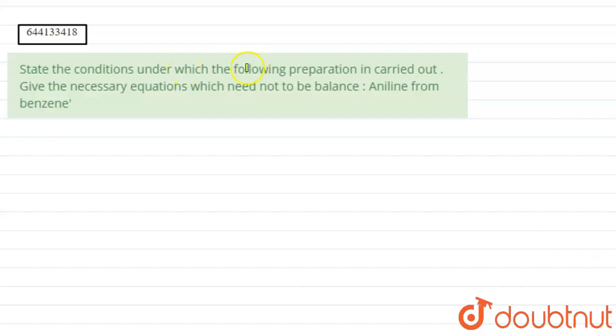we have to state the condition under which the following preparation is carried out and we have to give the necessary equation which need not to be balanced. So we have to give aniline from benzene. We have to produce aniline from benzene.